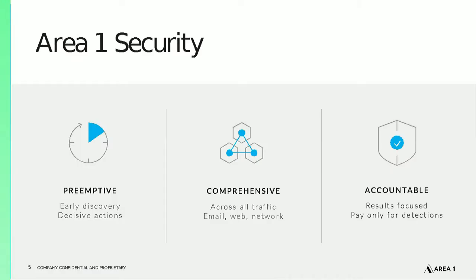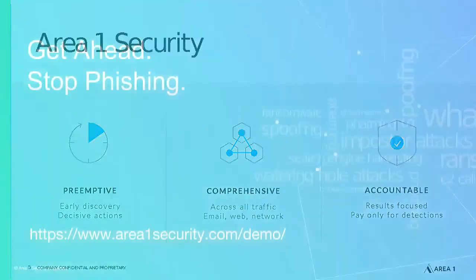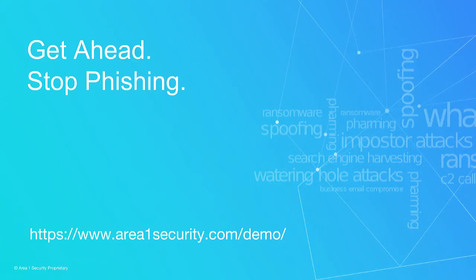Thanks for joining today's webinar. If you're concerned about phishing attacks evading your existing security defenses, Area 1 Security can help close the gap by adding a layer of defense that provides early visibility into phishing sites before they go live and prevents phish from breaching end users. The Area 1 Horizon anti-phishing service deploys easily with legacy security technologies and cloud office suites, and detects and protects you effectively from email, web, and network phishing attacks that other defenses miss. For more information or a demo, please visit our website at areaonesecurity.com/demo.